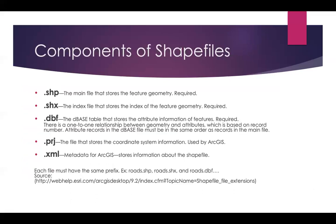Let's quickly note what makes up a shapefile. You've probably noticed that on your computer, shapefiles are actually multiple files. They're made of the .shp, .shx, .dbf, .prj, and .xml files. The main file that stores the geometry is the .shp. The .shx is an index file. The .dbf is the database file which stores the attribute data. The .prj file stores the coordinate system information, and the .xml is the metadata file.